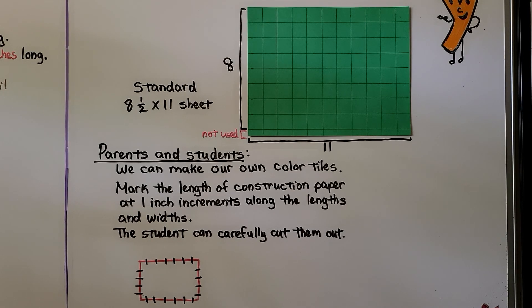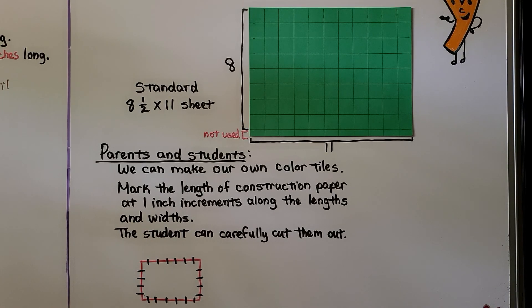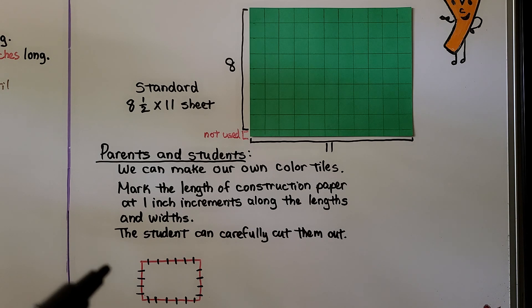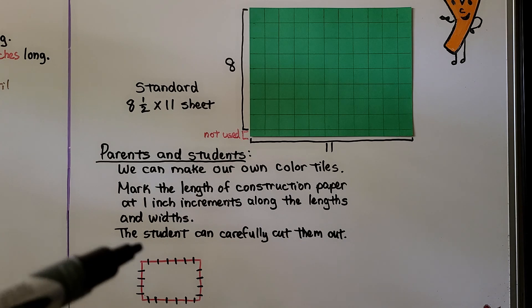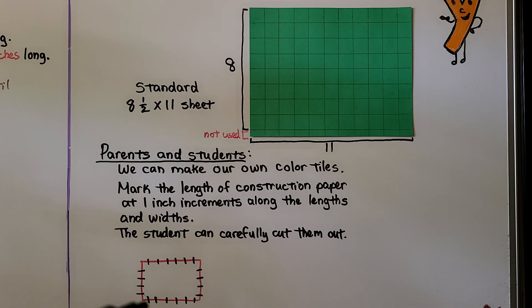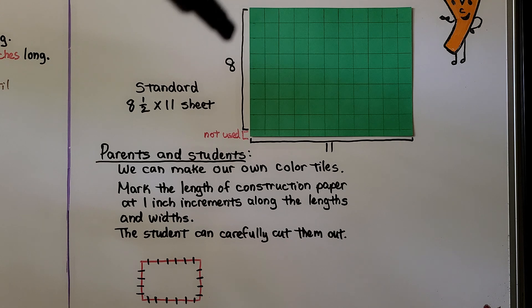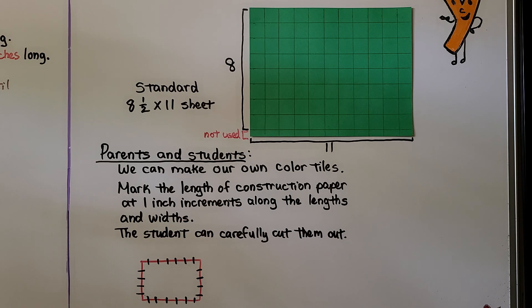We're going to be using these one-inch models, these color tiles, throughout this lesson and the next lesson. For parents and students, we can make our own color tiles. Mark construction paper at one-inch increments along the lengths and widths. A standard sheet is eight and a half by eleven, so there will be a small half-inch piece unused. Some construction paper is larger, so you may get a few more inch models.